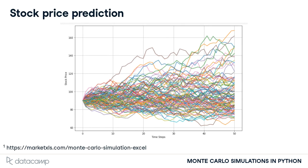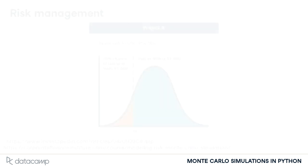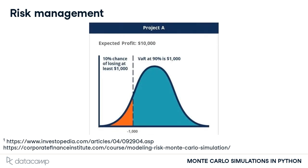In finance, they are used to simulate possible outcomes for a stock price, along with outcome probabilities over a certain period. They are also used in value-at-risk calculations, which calculate worst-case scenarios, such as how much an investor stands to lose in a really bad month.